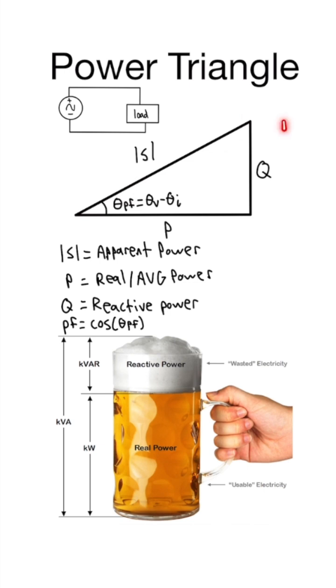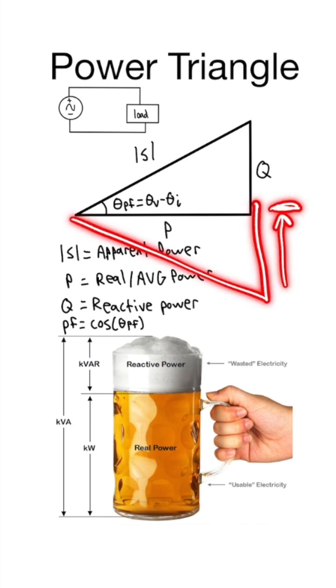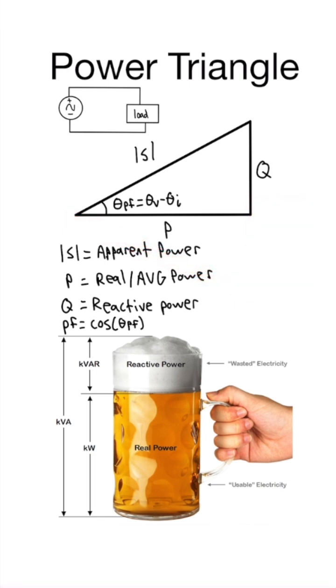So sometimes we'll do corrections. We'll add in capacitors to get reactive power to go down, or if the triangle is like this, we can add in inductors to make the reactive power go up. So pretty neat stuff.